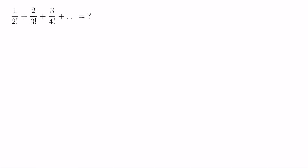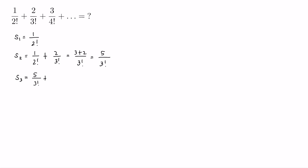If you look at the sum of the first term, clearly it's equal to 1 over 2 factorial. And then the sum of the first two terms is 1 over 2 factorial plus 2 over 3 factorial, which is equal to 5 over 3 factorial. And if you look at the sum of the first three terms, that is equal to the sum of the first two terms plus the third term 3 over 4 factorial, which is equal to 4 factorial.